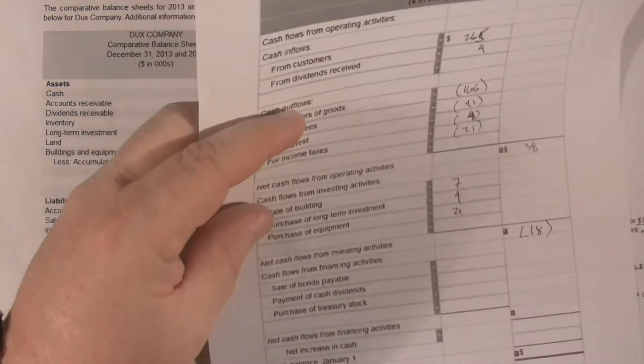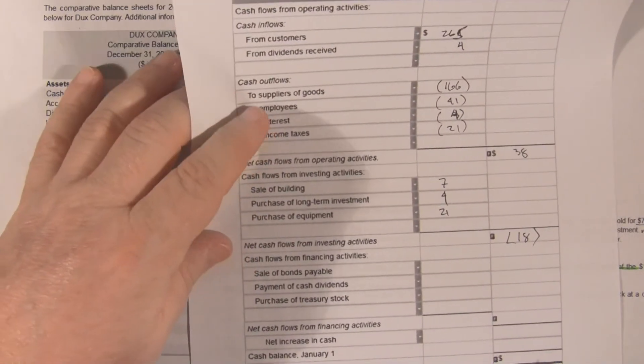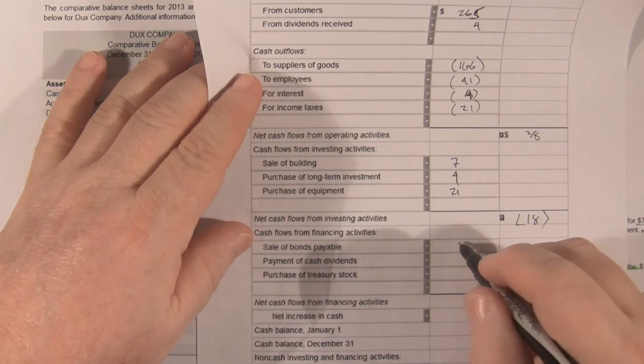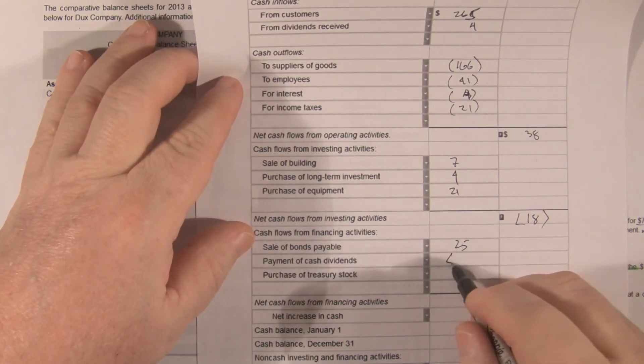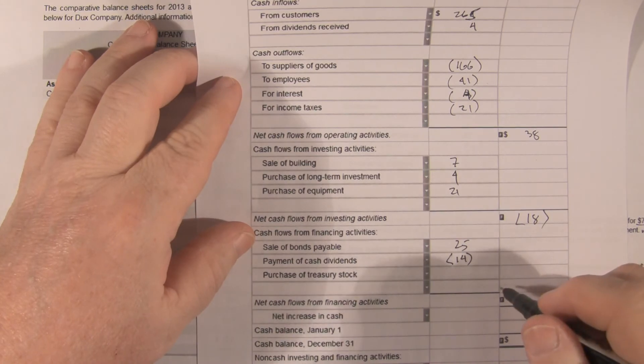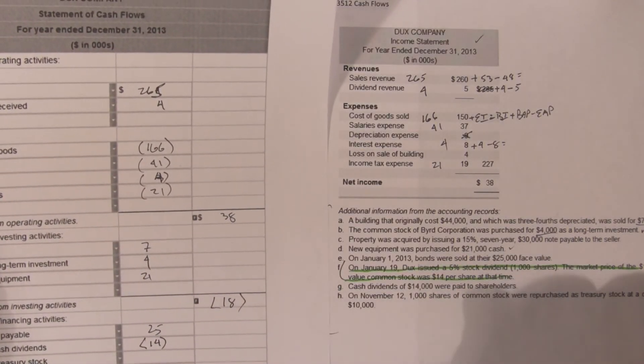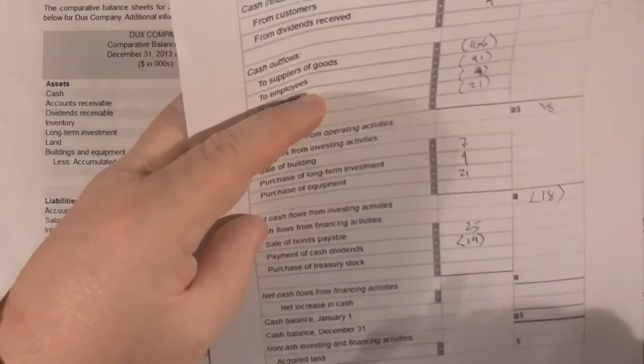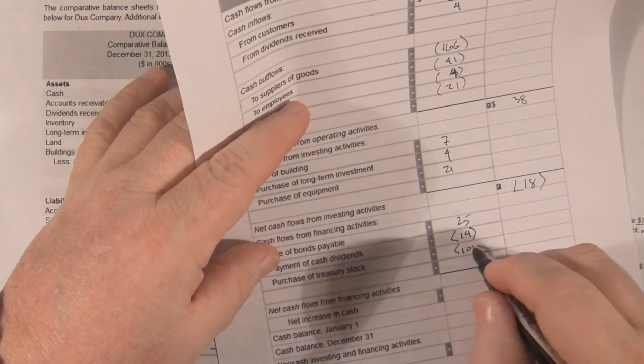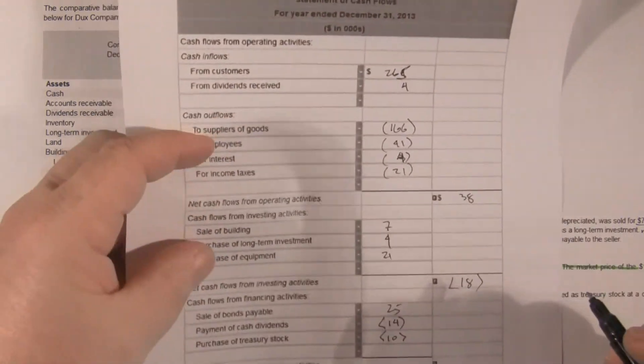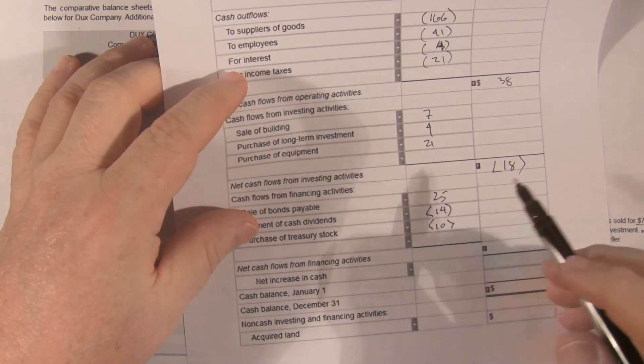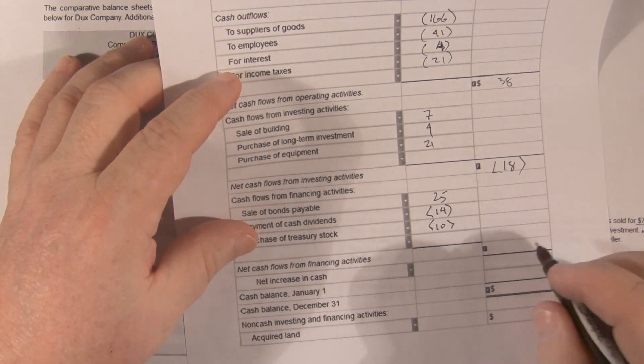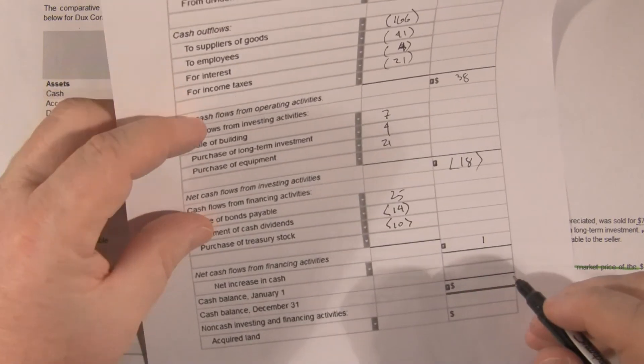Bonds were sold for 25,000 cash. We care about that. Cash in from bonds, 25,000. We paid cash dividends of 14. They tell us that. We purchased treasury stock for 10,000. So our total cash out is up 25, down 24. Net cash, 1.